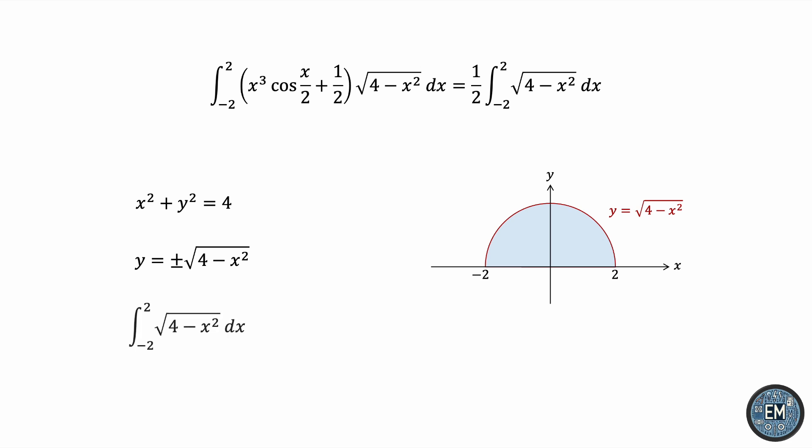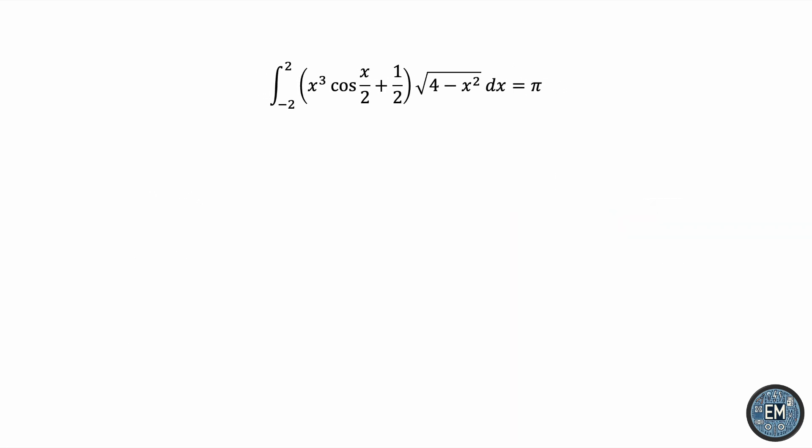The area of the semicircle, which is the integral from negative 2 to 2 of this square root, is pi times the radius squared over 2. This works out to be 2pi. Now, let's not forget that we have a 1 half outside the integral, so the final answer will be 1 half of 2pi, which is pi. So this entire integral works out to be pi.